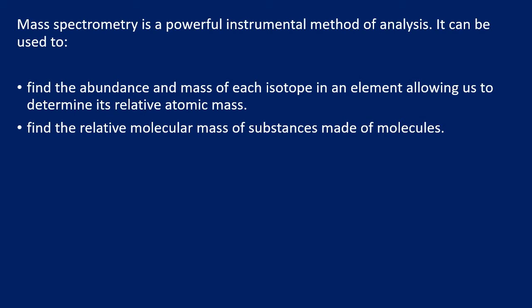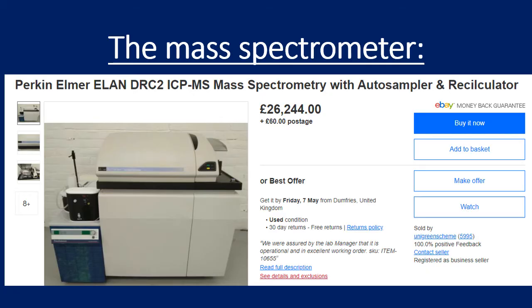If you're using molecules you also get fragmentation, which we'll discuss later. This is what a mass spectrometer looks like — it's similar in size to a photocopier, not that you need to recognize what they look like, but it puts some context to the topic. A quick search on Google shows they are fairly pricey, so you tend not to find them in colleges but you'll definitely find them at universities.